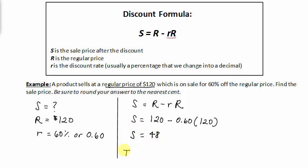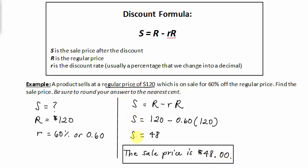So what does this mean? This means the sale price is $48, and since they wanted us to round to the nearest cent, it would be $48.00. Notice that the sale price is less than the regular price, $120, because the regular price is what the product was marked originally.